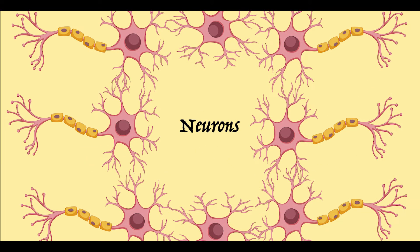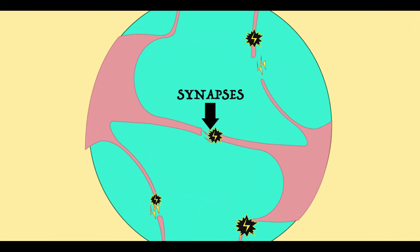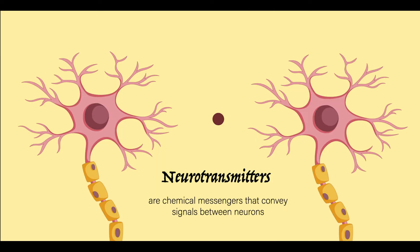The neurons within your brain then send information to one another across narrow gaps called synapses. These synapses transfer electrical pulses containing the information and trigger the release of chemical messengers that convey signals between neurons called neurotransmitters.